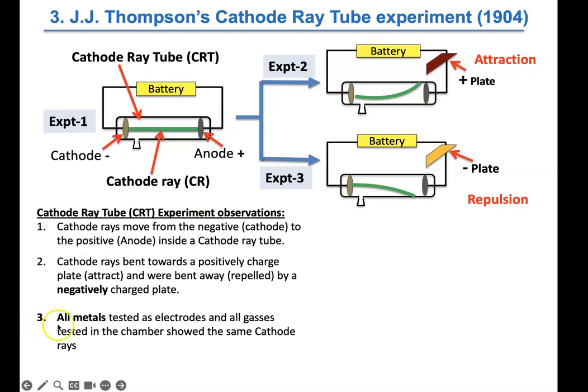In a third experiment, Thomson tested different metals for the cathode and the anode to see if these rays were produced by other materials, and found that every material he tested as a cathode formed cathode rays. He also tried different gases in the chamber. All of this indicated that cathode rays are made of some kind of subatomic particle — tinier than an atom — that is common to all matter.